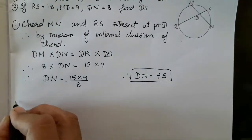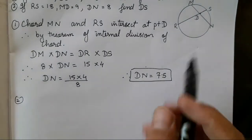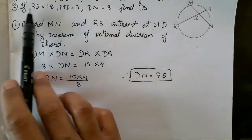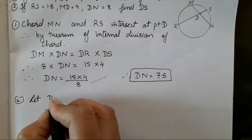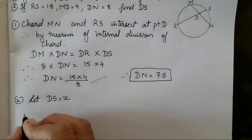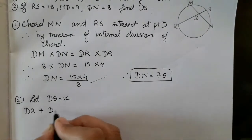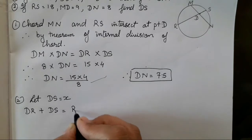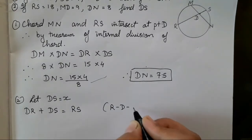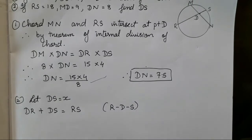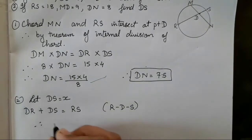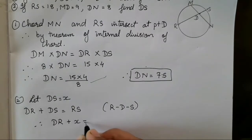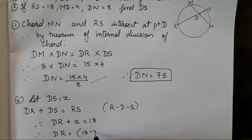Now let's solve the second sub-question. We need to find DS when these measurements have been given. Let's substitute DS as X. So DR plus DS equals RS, because D is between R and S. Therefore DR + X = 18, and so DR = 18 − X.